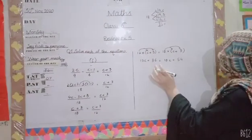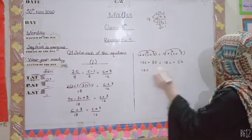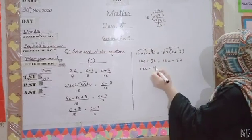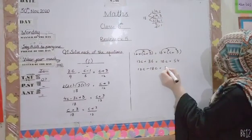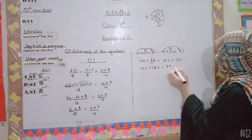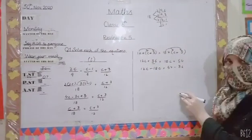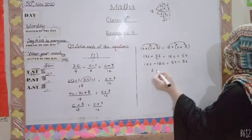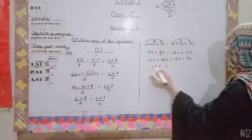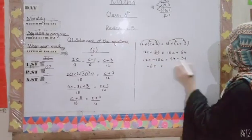Now collecting constants and variables: 12c minus 18c equals 54 minus 36. Calculating: 12 minus 18 is negative 6c, and 54 minus 36 is 18.